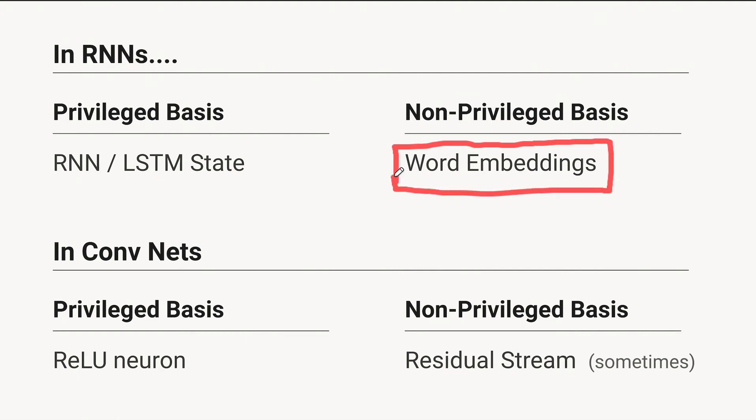For a word embedding, it just doesn't make sense to ask what does basis dimension zero mean, or what does basis direction one mean — there's nothing special about those basis dimensions. That doesn't mean that you can't study the word embedding; people study word embeddings all the time, but you can't do it by just looking at the basis dimensions.